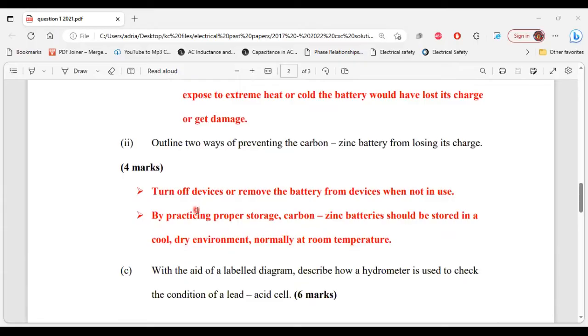It says outline two ways of preventing the carbon zinc battery from losing its charge. One, turn off devices or remove the battery from devices when not in use. Two, by practicing proper storage. Carbon zinc batteries should be stored in a cool dry environment normally at room temperature.